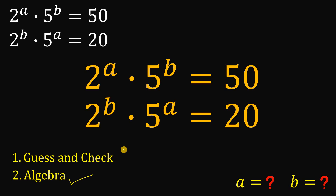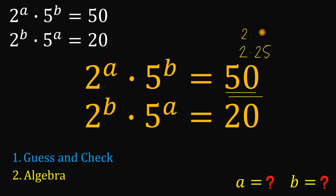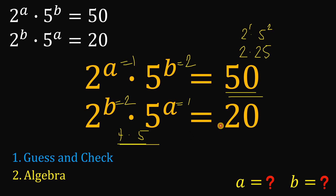Let's start with the guess and check method. Since we have 50, we can rewrite this as 2 times 25, which is 2 times 5 raised to the power of 2. So 50 is just 2 raised to the power of 1 multiplied by 5 raised to the power of 2. It follows that a equals 1 and b equals 2. Checking the second equation: 2 raised to the power of 2 is 4, multiplied by 5 gives us 20. So a equals 1 and b equals 2.